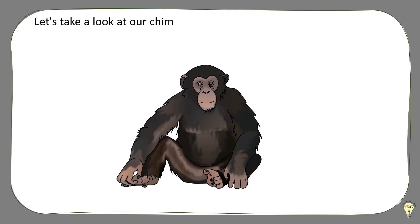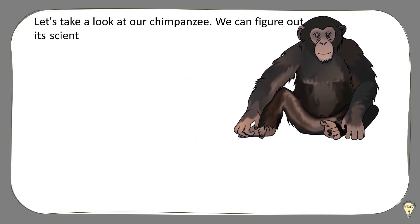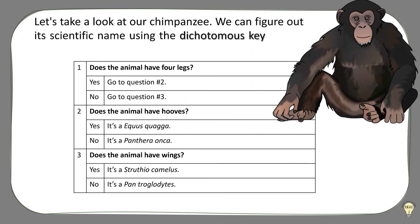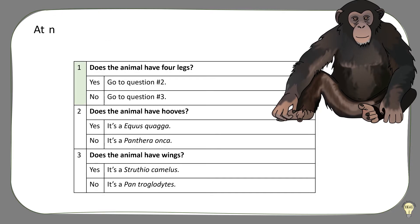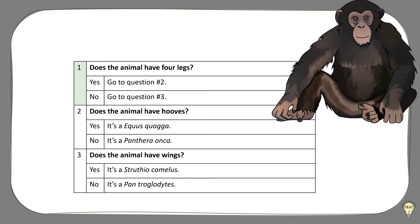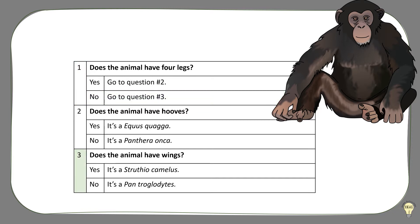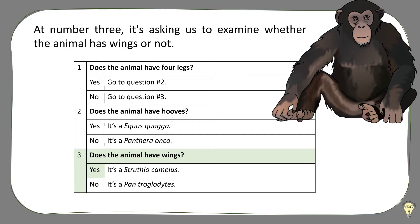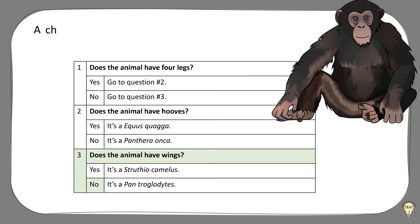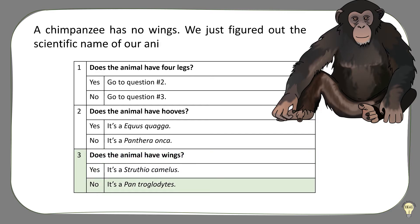Let's take a look at our chimpanzee. We can figure out its scientific name using the dichotomous key. To use it, start at number 1. At number 1, it's asking us to observe the number of the animal's legs. A chimpanzee does not have 4 legs, so we will go to question number 3. At number 3, it's asking us to examine whether the animal has wings or not. A chimpanzee has no wings. We just figured out the scientific name of our animal.